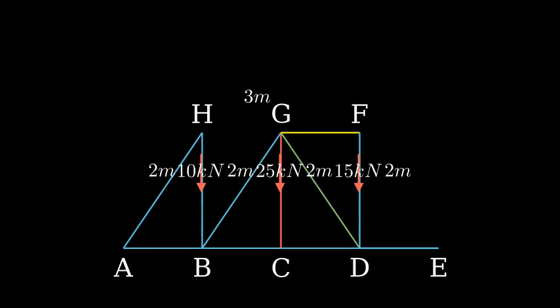There are three vertical loads: 10 kilonewtons, 25 kilonewtons, and 15 kilonewtons applied at points B, C, and D, respectively. First, let's calculate the reaction forces.